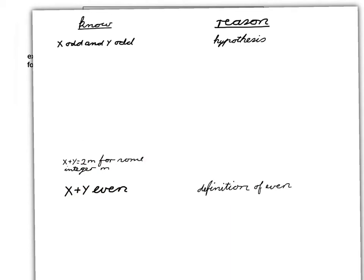Now let's go back here and fill in, using the working definition of odd, what it means to say that x and y are both odd. I'm going to put that here. And the reason will be because of the definition of odd.